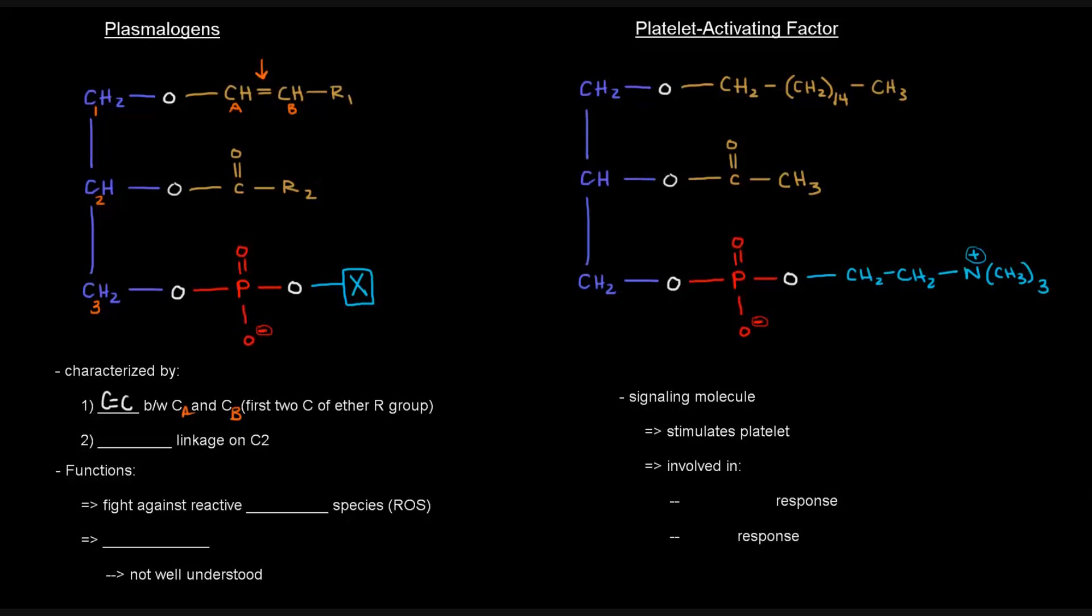That's one thing. The other thing is that there is an ester linkage on carbon 2. So if we have a double bond between the first two carbons of the R group up here from the ether linkage and an ester linkage on the second group, then we have what's called a plasmalogen.